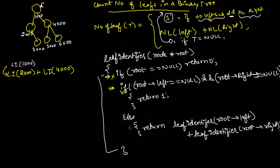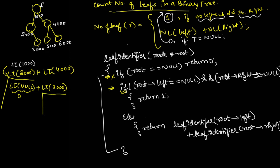For `li(2000)`, we execute the else part and call `li(null)` plus `li(3000)`. When `li(null)` is called, the initial null check executes and returns 0. When `li(3000)` is called, the left and right pointers are both null, so the second condition executes and returns 1. So `li(2000)` returns 0 plus 1, which is 1.